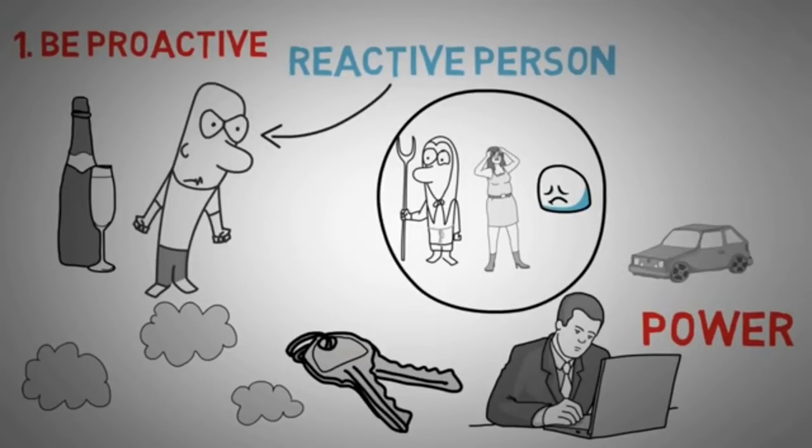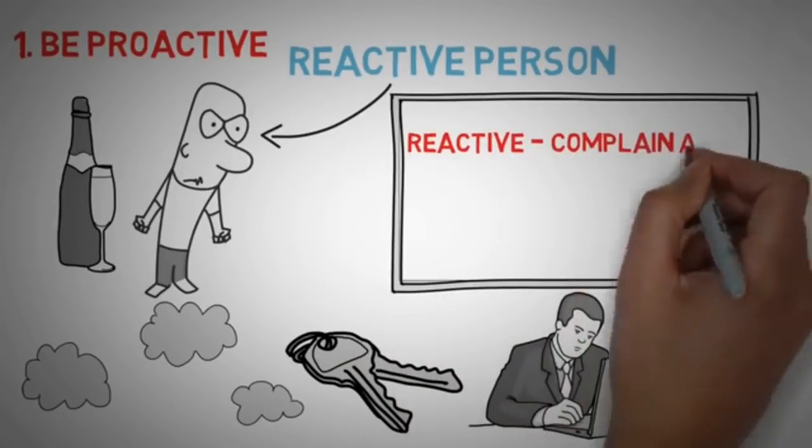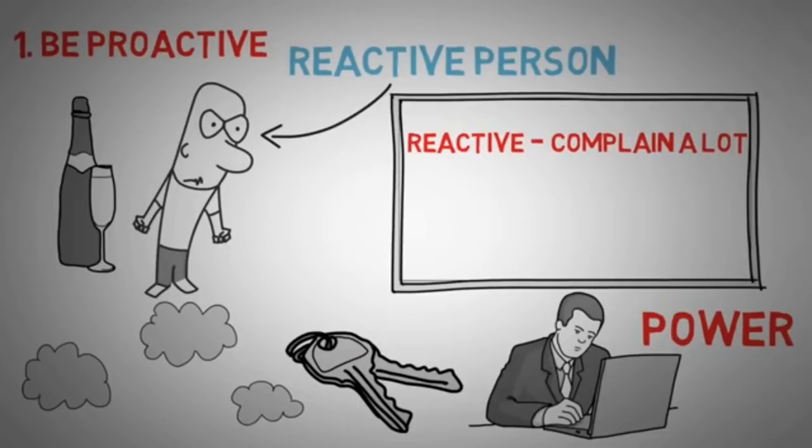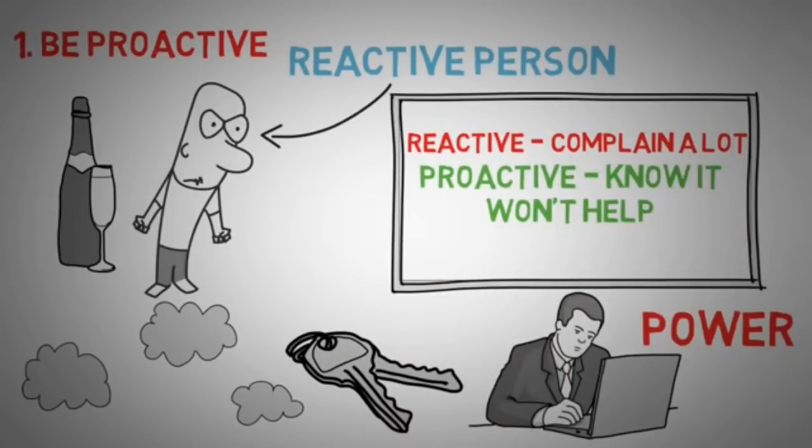So in short, reactive people are people who complain a lot instead of actually going out and changing their actions. And proactive people understand that even if their complaining was justified, complaining about it wouldn't change anything. It would just be negative toxins in their life, polluting their social environment of their peers. Most people choose to complain simply because it's easier. So let's move on to the second habit.